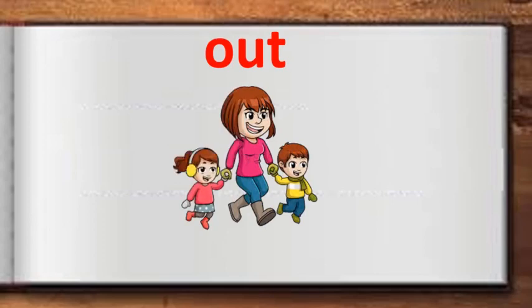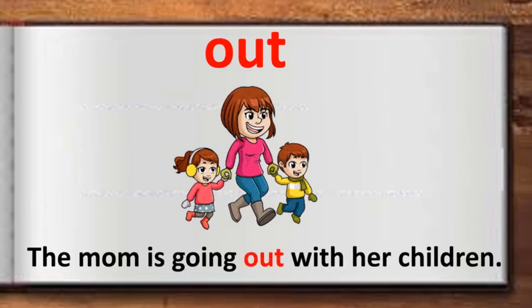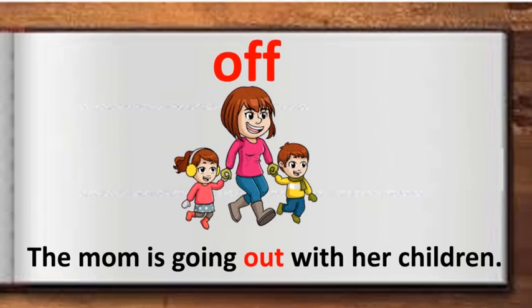The word is 'out.' Please repeat after me. Out means moving away from a particular place. Look at the image — try to make a sentence with the word 'out' that goes with this image. Meanwhile, I will say the sentence I have made: the mom is going out with her children.